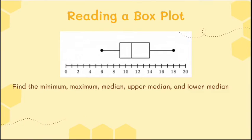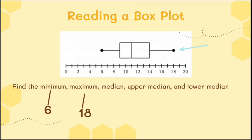Now let's read a box plot that's already given to us. I want to identify the minimum, maximum, median, upper median, and lower median. The minimum is the leftmost value — it looks like it's 6. The maximum, the rightmost value, is 18. The median is the line in the middle of the box, which looks like 11. The upper median is where the box ends — that's 14. The lower median is where the box starts — that's 9.